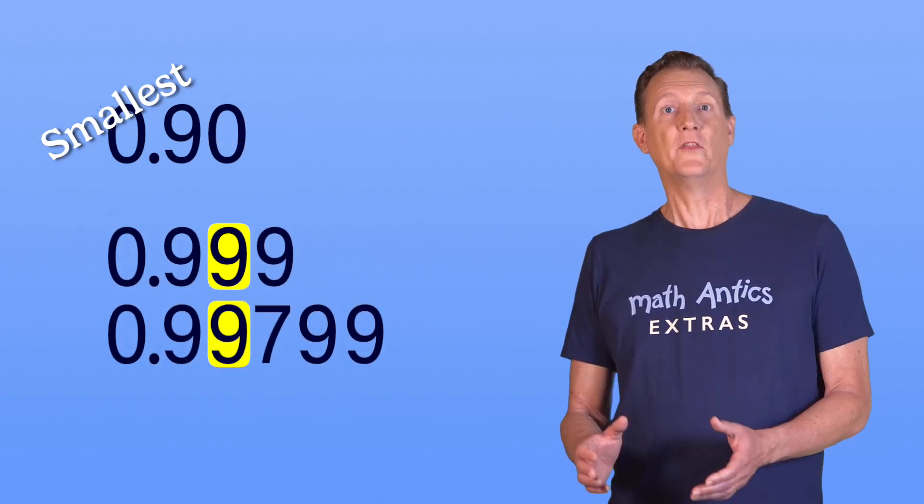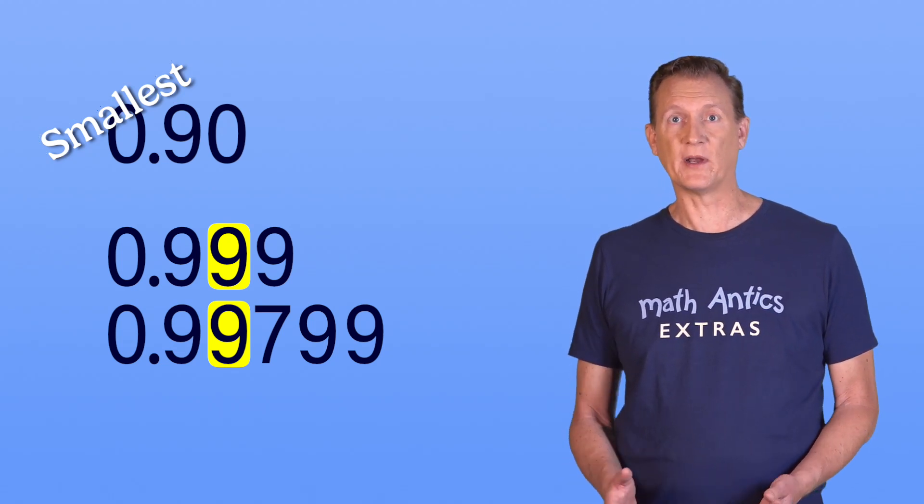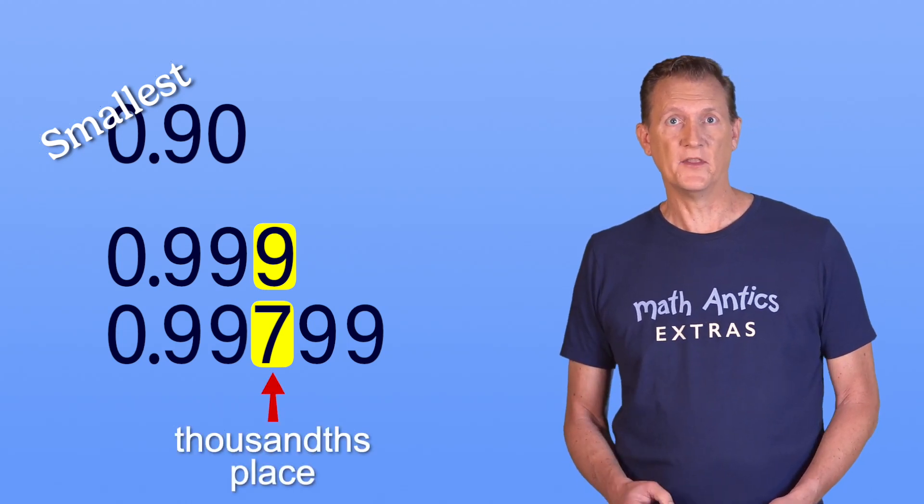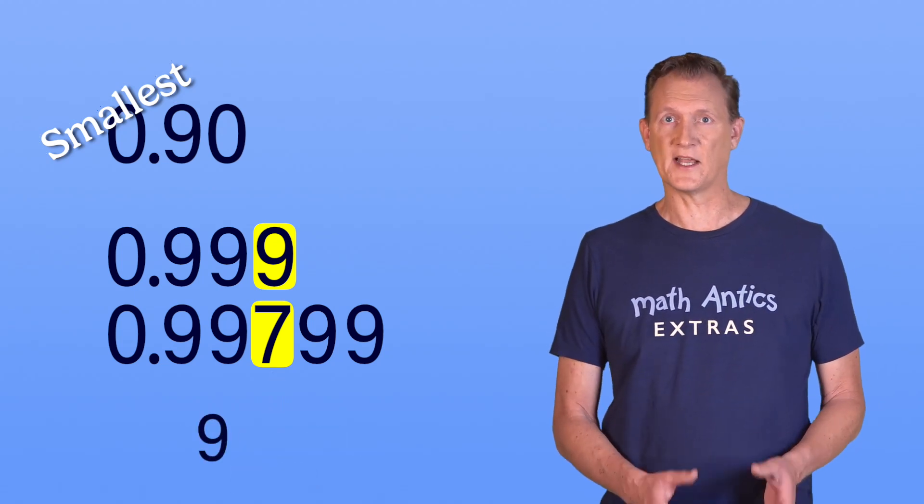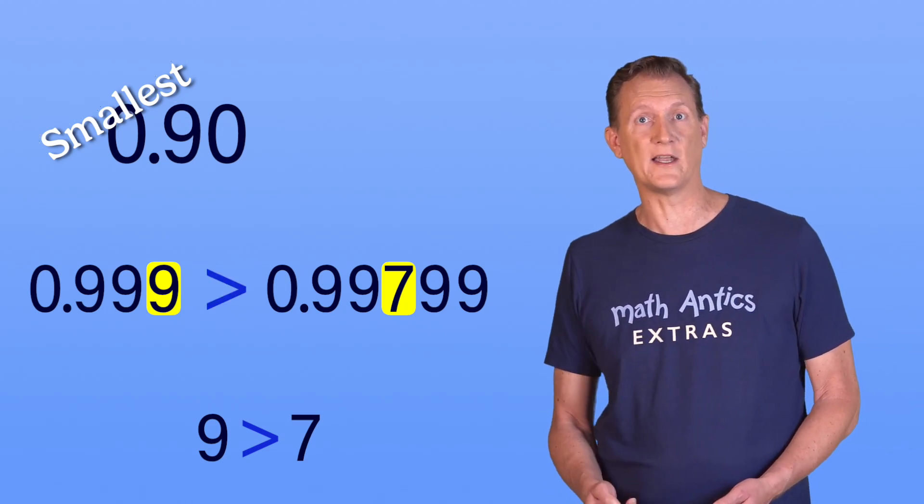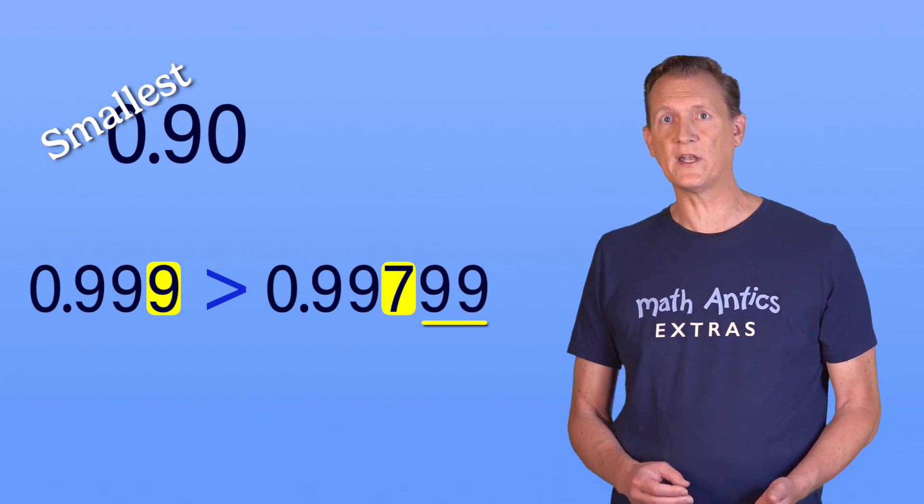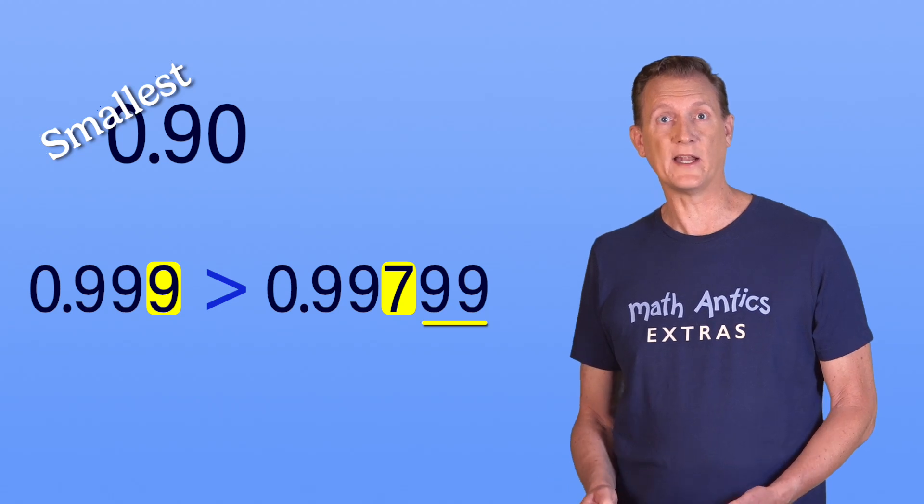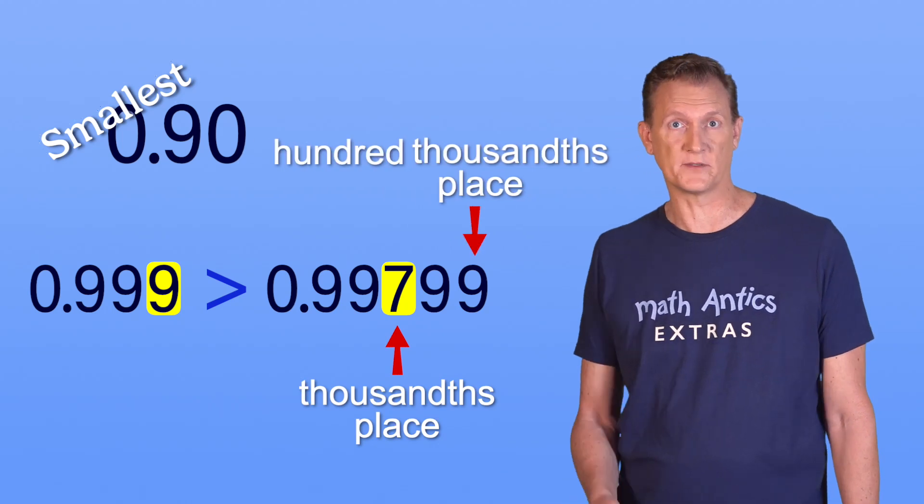But what about the others? They both have a 9 in the hundredths place, so you can't tell which is bigger by comparing those digits. You need to look at the next place to the right, the thousandths place. This number has a 9 in that place, while the last number has a 7. Since 9 is greater than 7, we know that 0.999 must be greater than 0.99799. Again, notice that the extra digits at the end of 0.99799 didn't make it greater than 0.999, because the thousandths place is actually larger than the ten-thousandths or hundred-thousandths place.